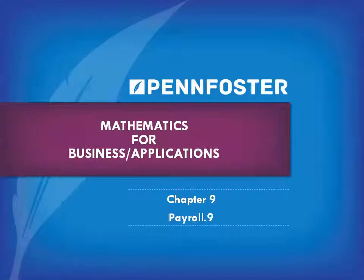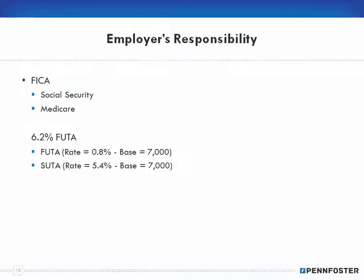Welcome back to Math for Business and Finance and Math Applications. We're still on Chapter 9, the theory of payroll, and fortunately this is going to be the last video on this theory. We've covered pretty much everything you need to know from an employee's perspective, but now we also need to discuss the employer's responsibility. Let's use round numbers to make things easier — say the employee gets paid a thousand dollars. Most people think that's all they get paid, but in reality they actually get paid more.